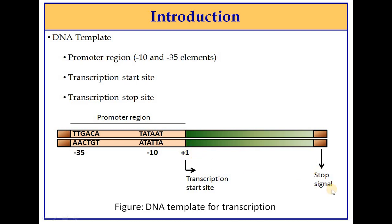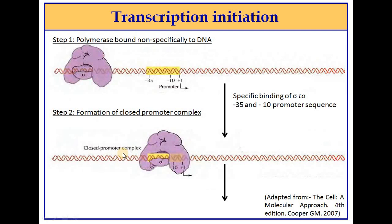There is a start site where RNA synthesis begins and a stop signal where transcription stops — these make up the promoter region in prokaryotes. For initiation, transcription in prokaryotes is divided into three steps: initiation, elongation, and termination. First, RNA polymerase randomly binds to DNA, then scans along the DNA until it finds the minus 35 or minus 10 elements. Once detected, the sigma subunit of the polymerase enzyme recognizes these elements.